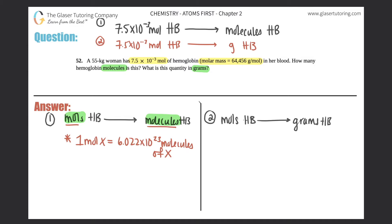And I represent X as anything, whether it's an element or compound. So we're going to use this conversion factor, one mole of anything equals Avogadro's number to get from moles to molecules. So let's try this one out. They tell us that we have 7.5 times 10 to the negative 3 moles of hemoglobin.